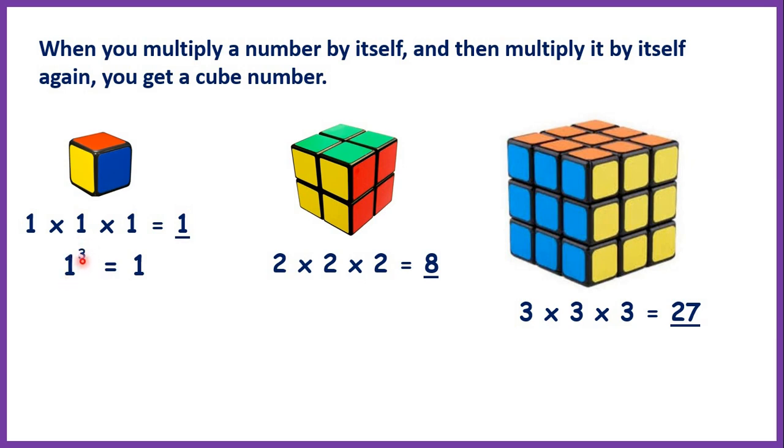So 1 cubed is 1, 2 cubed is 8 because 2 times 2 times 2 is 8, and 3 cubed is 27 because multiply 3 by itself three times and you have 27.